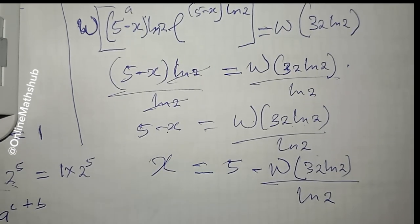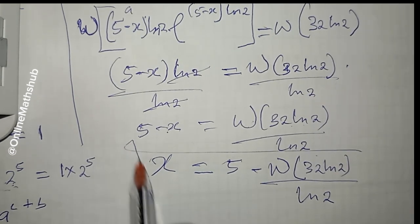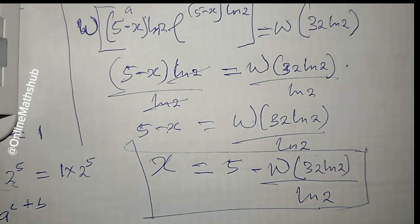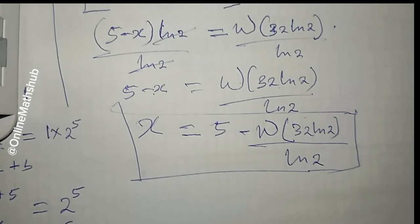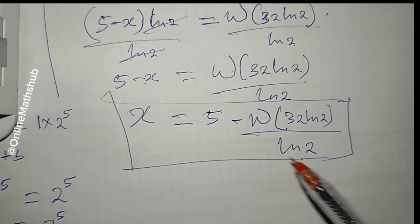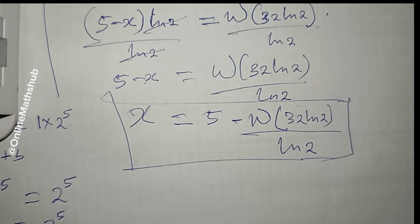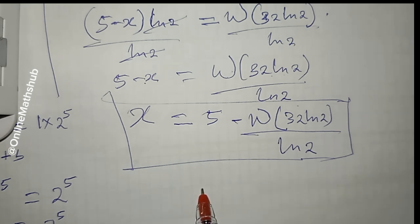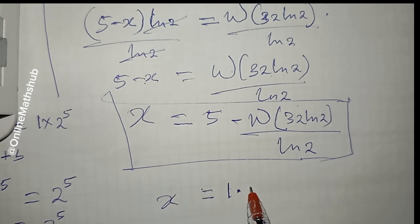This is the value of x that satisfies the equation. To compute the decimal value, head to WolframAlpha.com. Evaluating this gives x ≈ 1.7156.